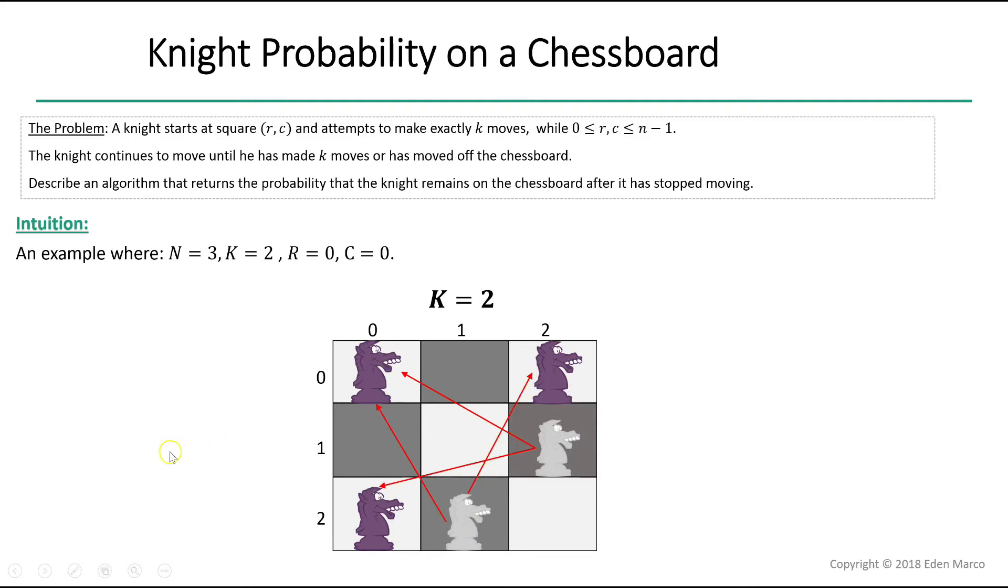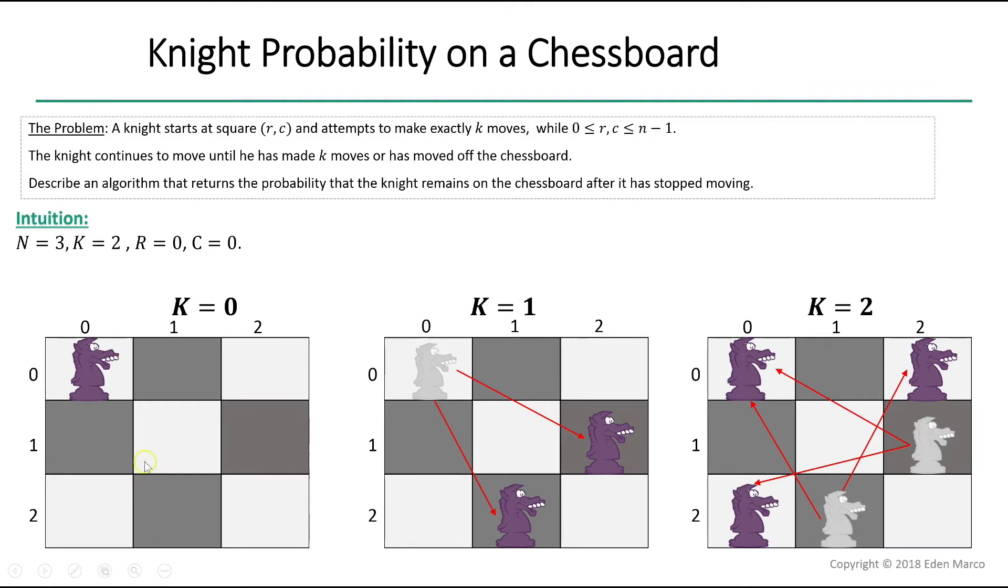Let's summarize what we know so far and figure out our output. In total, we have four different paths which are comprised of exactly two knight steps that keeps our knight on the board. The probability for each path is 1 over 8 times 1 over 8 equals 1 over 64. Thus, if we sum all our four paths, we should return 0.0625.